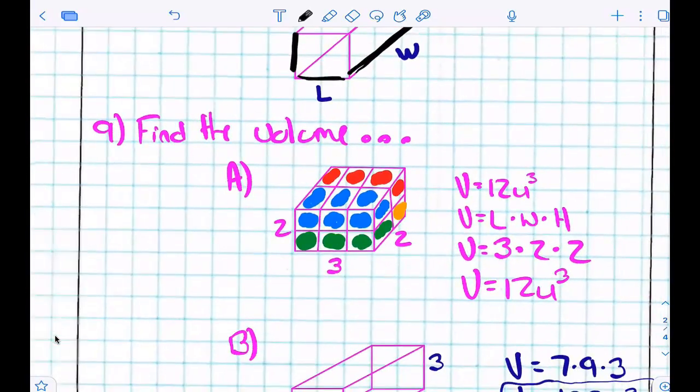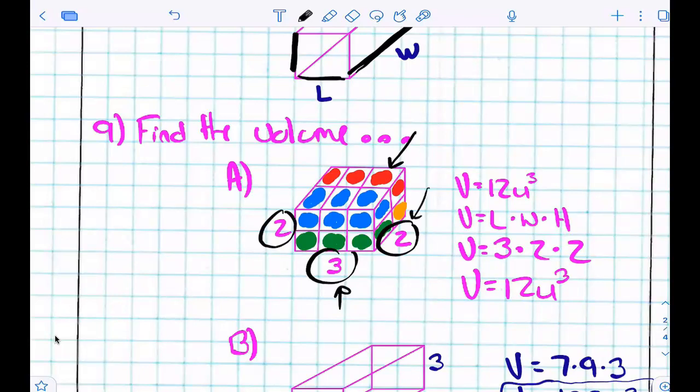Can you, on a 3D shape, can you simply just count the number of cubes? Yeah. If they give you the number of cubes and you can count them, count them. It's going to be your volume, right? You can also use the dimensions. So, this shape is 3 wide. I'm sorry, 3 long, 2 wide, and 2 high, right?